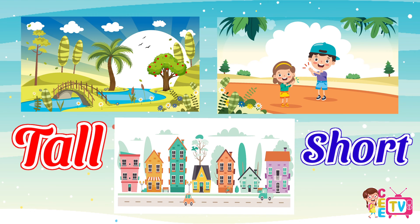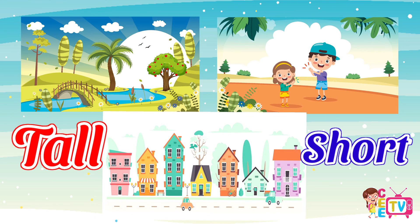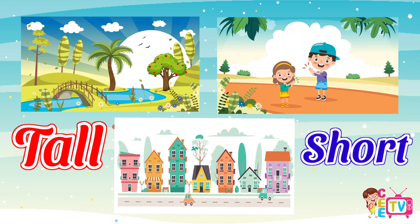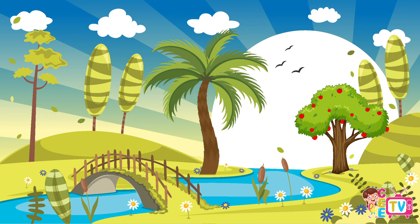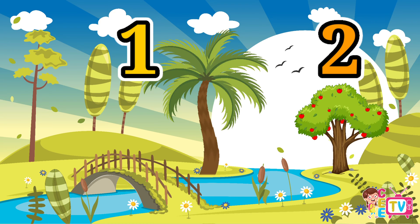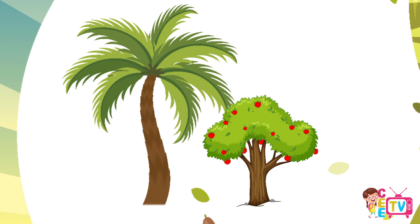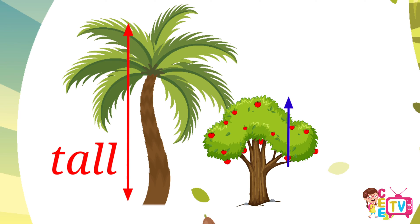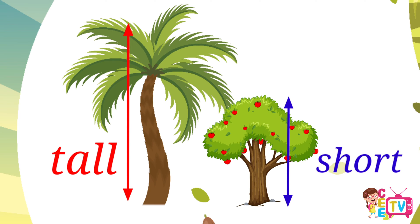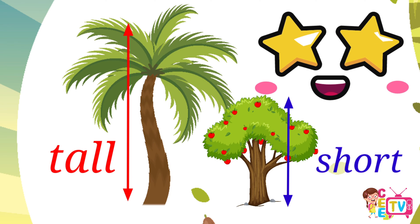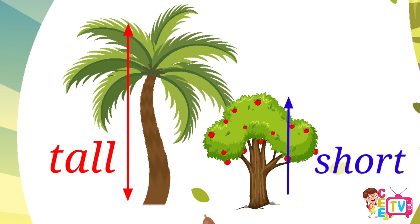Let's take a closer look at these pictures so that we can identify which of these objects are tall and which are short. I have two trees here — one, two. Can you tell me which tree is tall and which tree is short? The palm tree is tall, while the apple tree is short. Very good! You are correct!